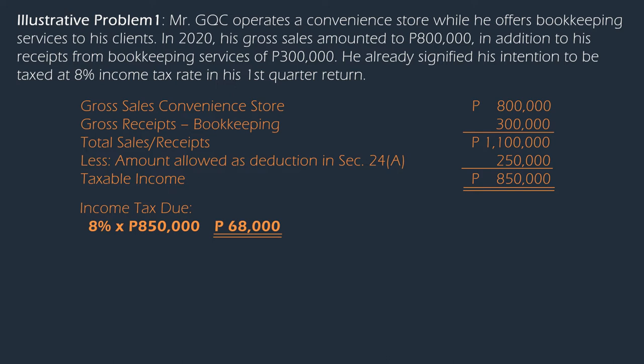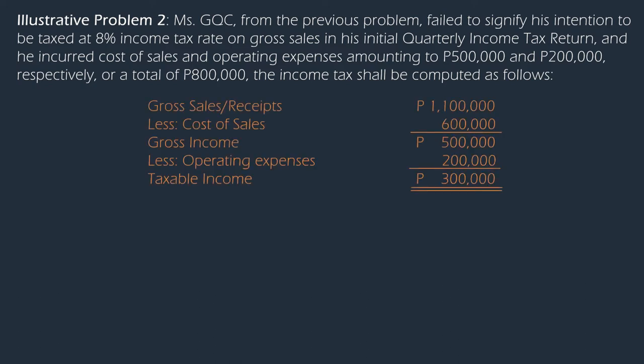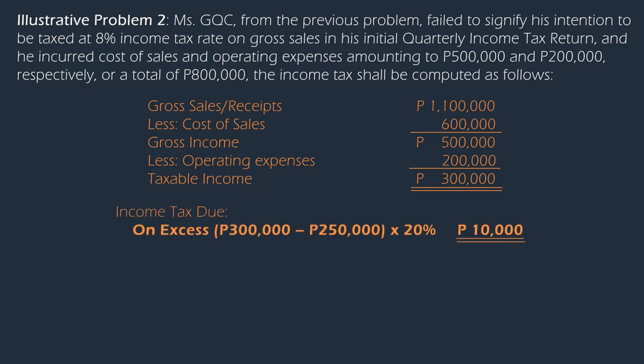This is also in lieu of graduated income tax rates and 3% business tax. In our next illustration, the taxpayer failed to signify intent for the 8% income tax rate. The income tax due shall be computed using the graduated income tax rates. Aside from the computed income tax, the taxpayer is also liable for 3% percentage tax under Section 116.